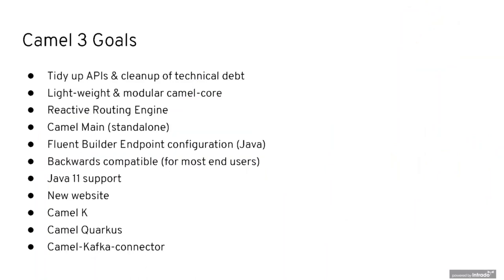The community goals for CAMEL 3 included: cleaning up technical debt and tidying up the APIs; modularizing the CAMEL core and making it lightweight; introducing a complete reactive routing engine; adding CAMEL Main for standalone support; introducing endpoint configuration and component configuration; making CAMEL 3 as backwards compatible as possible with CAMEL 2; adding Java 11 support; building a new website; launching the new ecosystem projects — CAMEL K, CAMEL Quarkus, and CAMEL Kafka Connector; and moving Spring Boot support out as a separate release from the core.